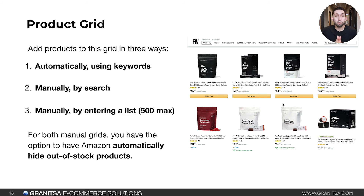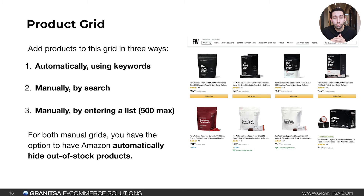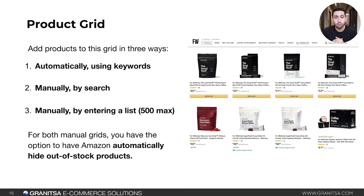The product grid content block has three ways to add products: automatically generated using keywords, manually by searching and adding ASINs, or manually by entering a list of up to 500 ASINs separated by commas. For both manual grid options, you can have Amazon automatically hide out-of-stock products, which is useful in case products go out of stock with FBA.